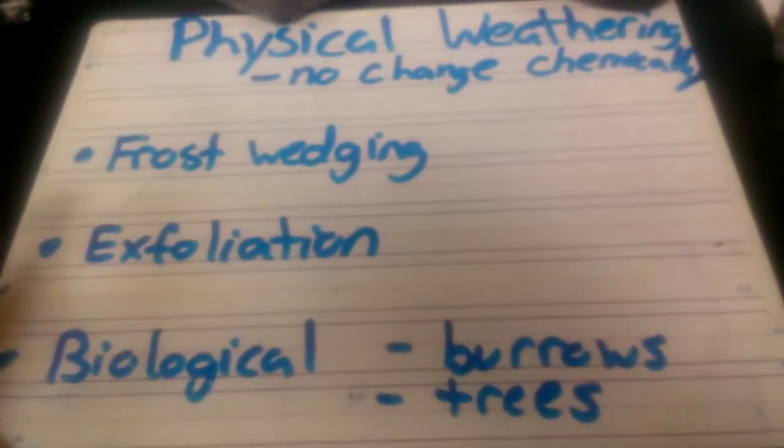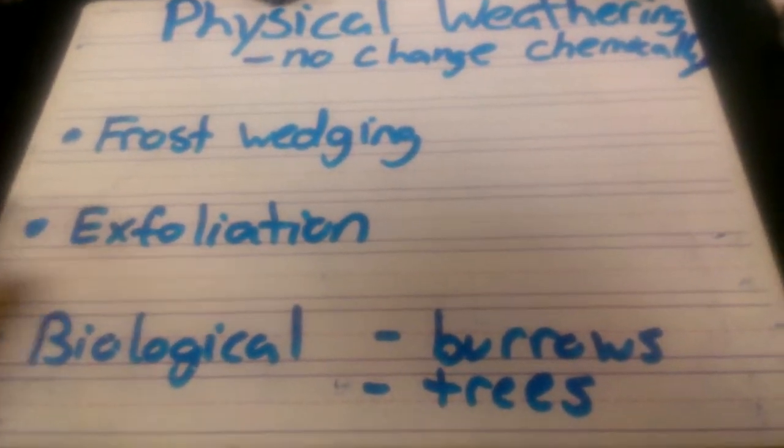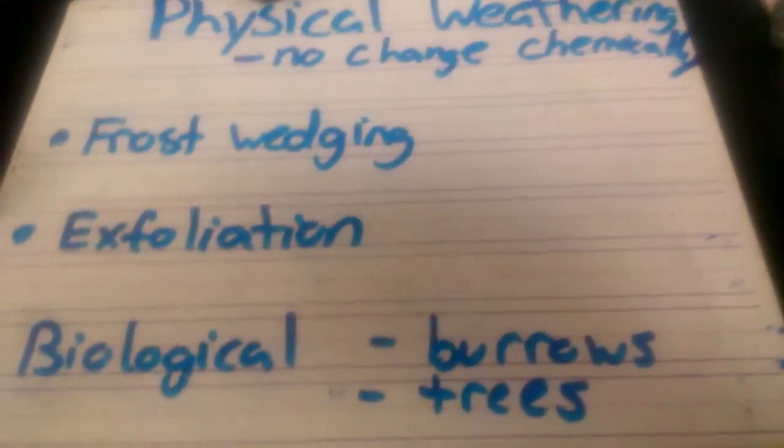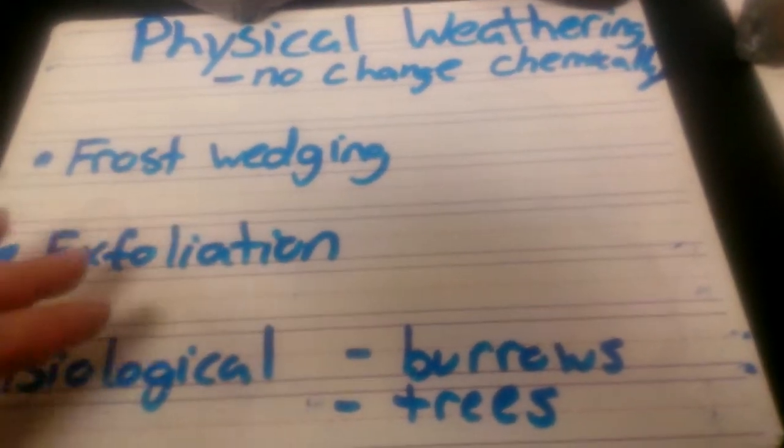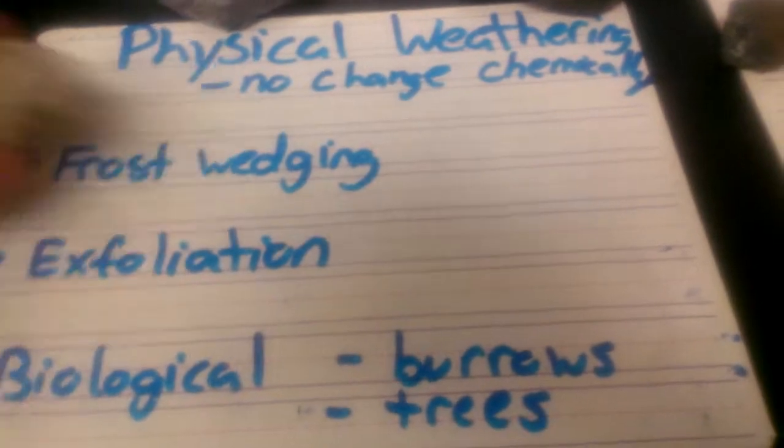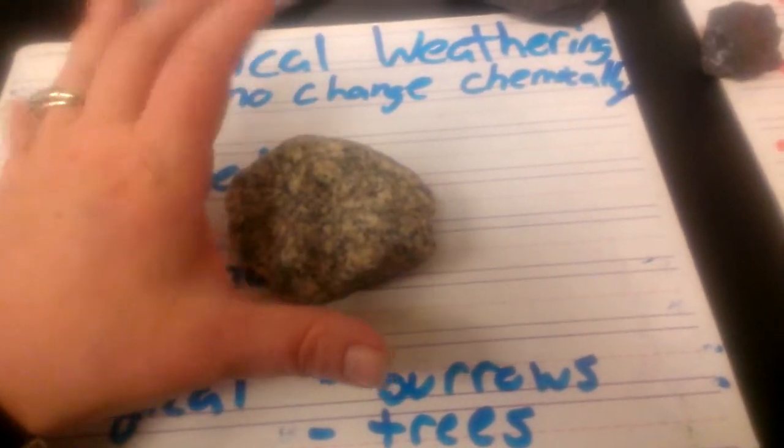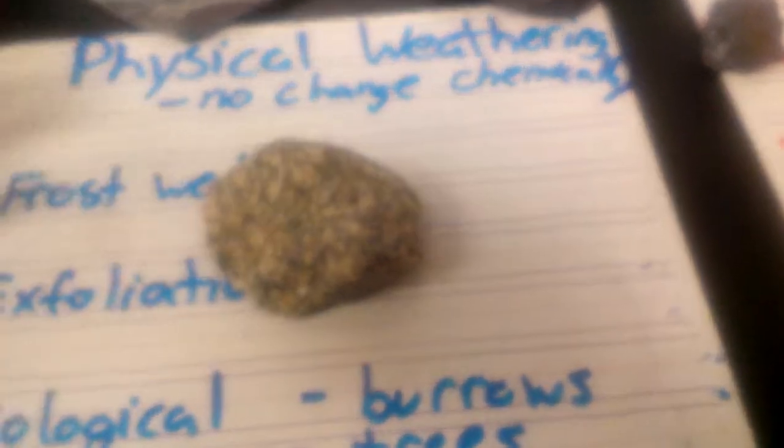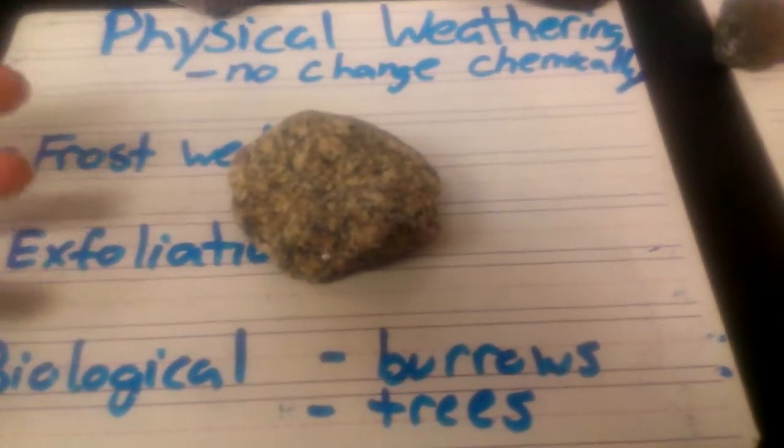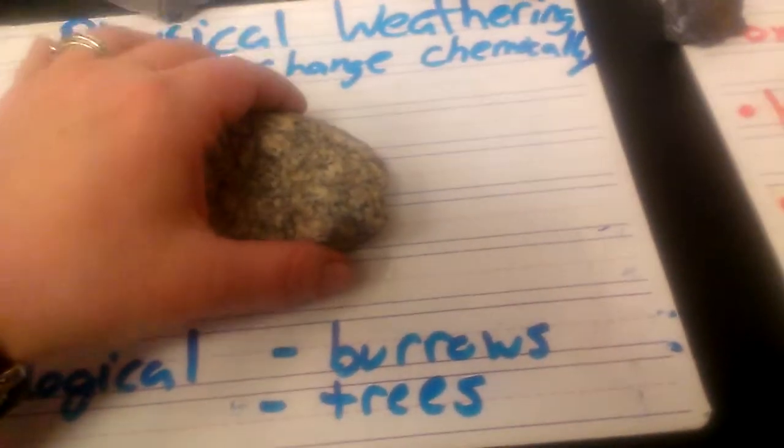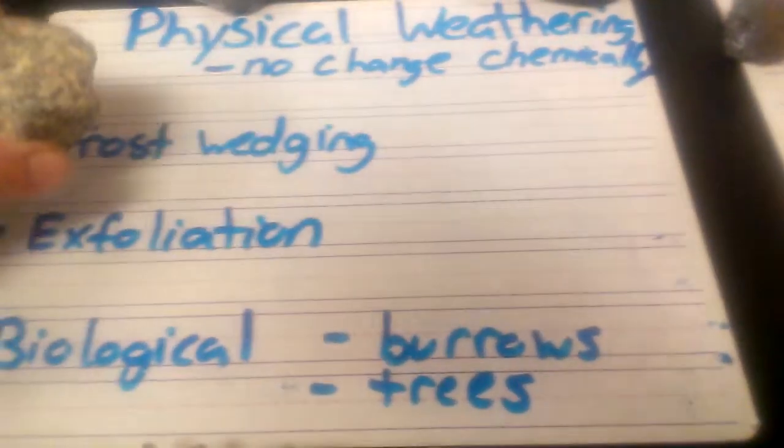And then the last one that we really want to focus in on is called biological weathering. So that means things like trees with their roots, the roots grow into the rock, so if they were to grow into this rock, they would grow right up, as the tree gets bigger, it gets stronger, and it would break the rock into pieces. So if we broke it into pieces, that's weathering, we didn't change its chemical composition, so that's definitely a physical weathering. So that would be biological.